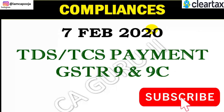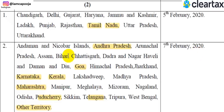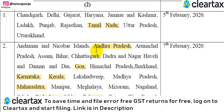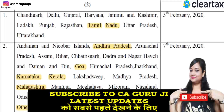Which states have a due date of 7th February for GST 9 and 9C? On the screen you can see: Andaman and Nicobar Island, Andhra Pradesh, Arunachal Pradesh, Assam, Bihar, Chhattisgarh, Dadra and Nagar Haveli, Daman and Diu, Goa, Himachal Pradesh, Jharkhand, Karnataka, Kerala, Lakshadweep, Madhya Pradesh, Maharashtra, Manipur, Meghalaya, Mizoram, Nagaland, Odisha, Puducherry, Sikkim, Telangana, Tripura, West Bengal, and other Territories.